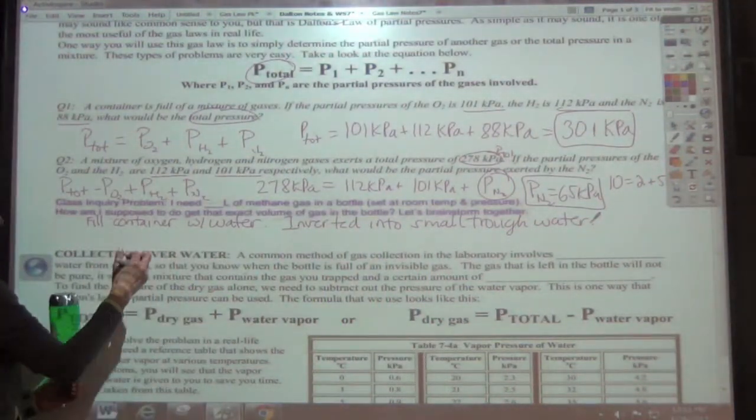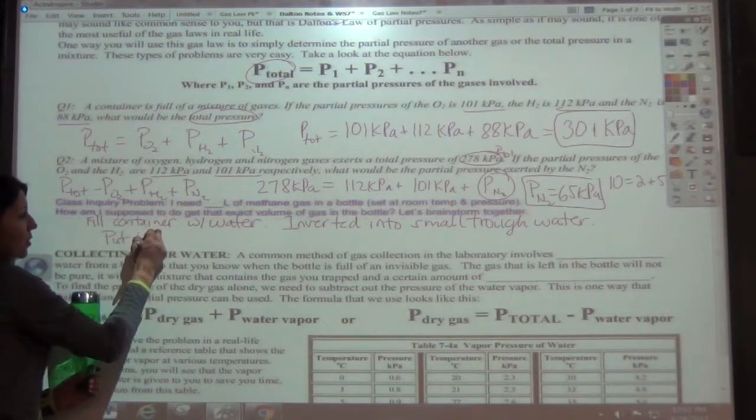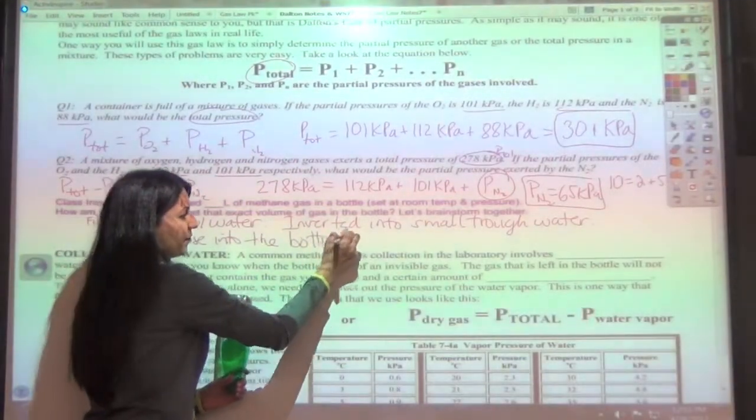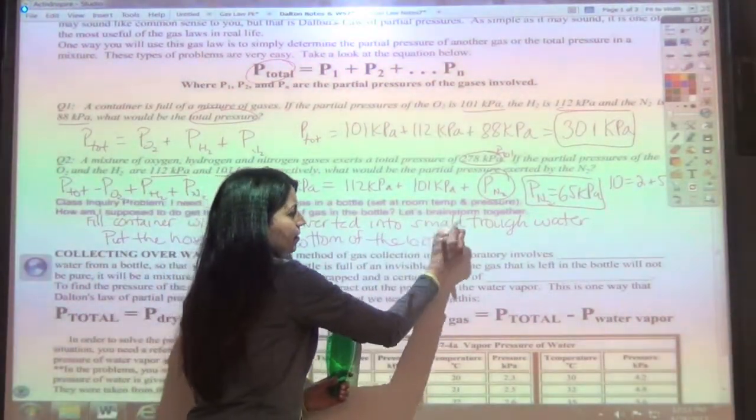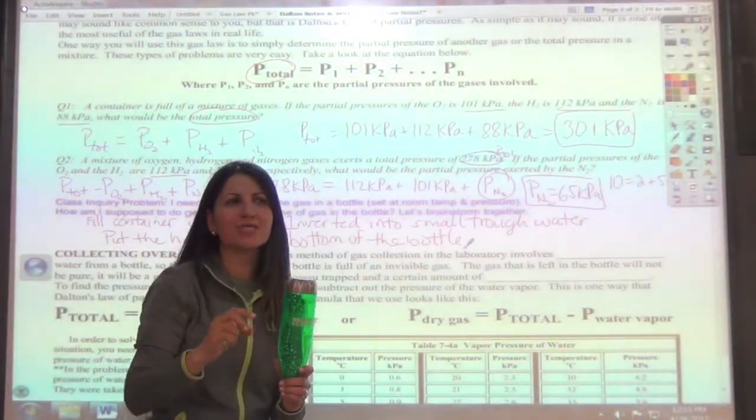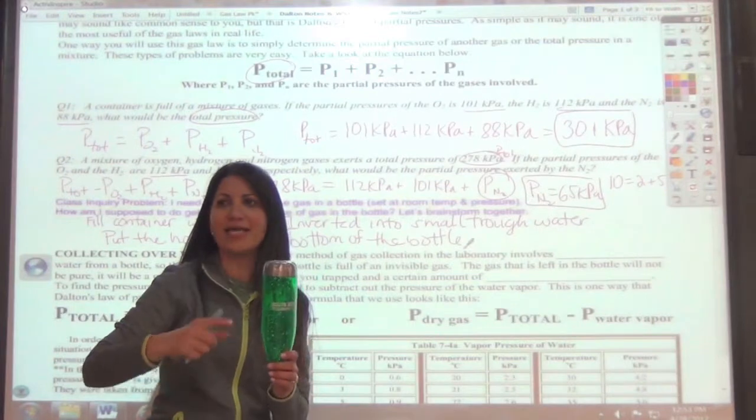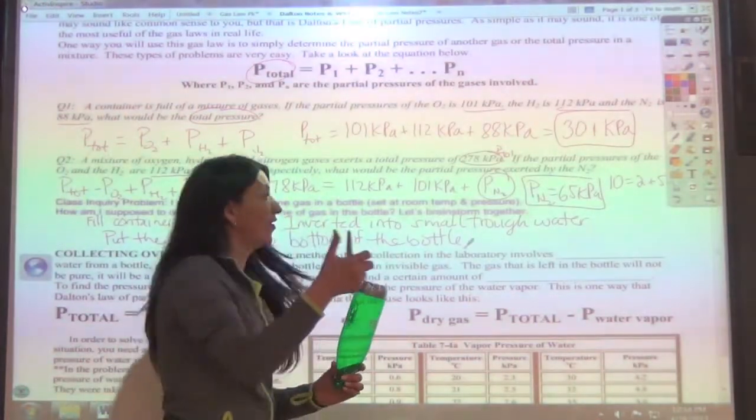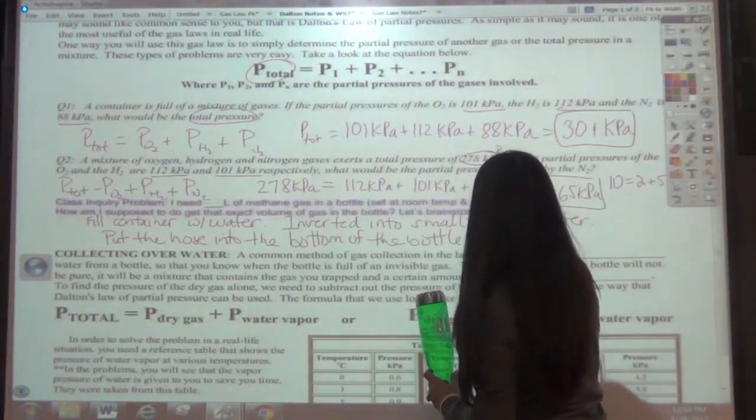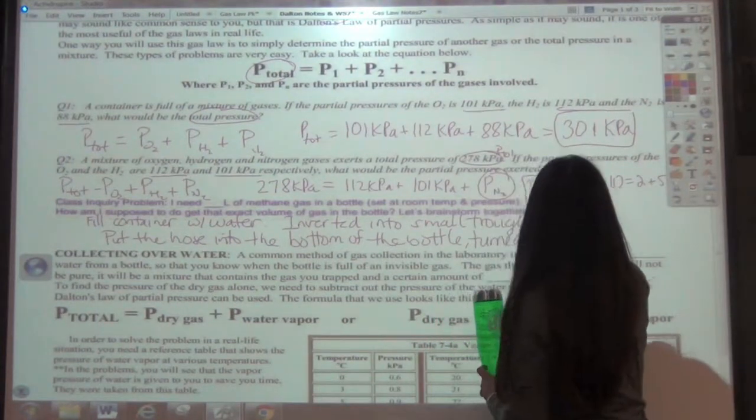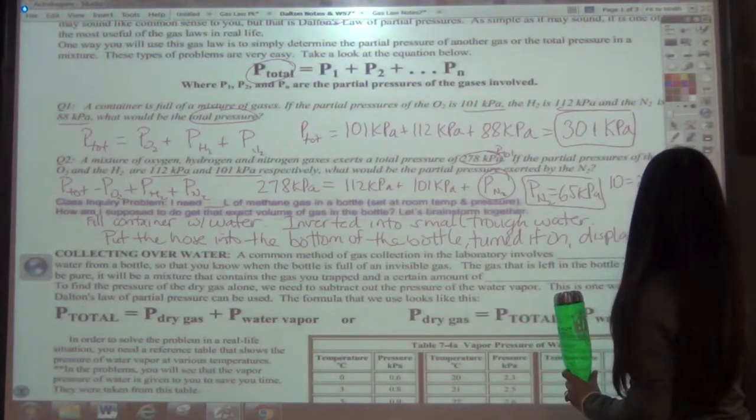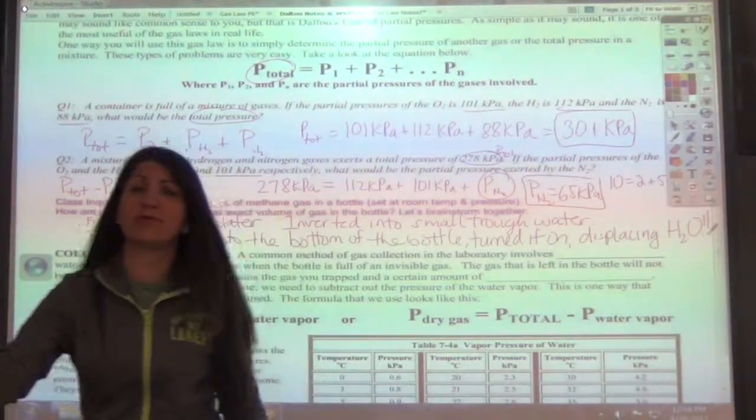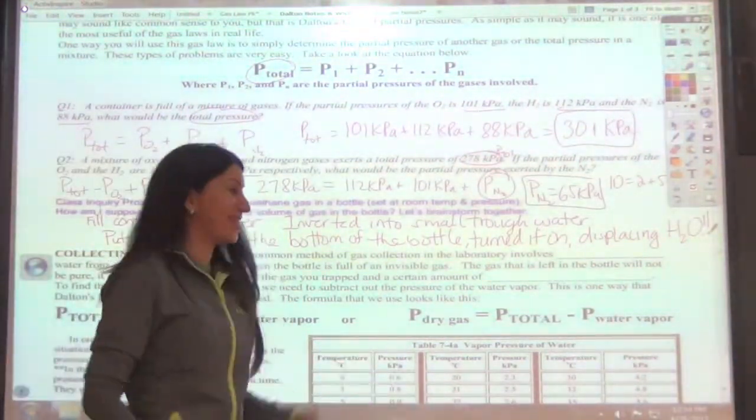And so we inverted it in and then we were able to put the hose into the bottom of the bottle. And then what did the gas do when we turned on the gas, when we turned the methane gas on? It pushed the water out. What word can we use? It starts with a D. We displaced the water. Awesome. And so we put the hose in and turned it on, displacing the water. Okay, we displaced the water and then once we got to a point where it was filled, then we know that it's now filled with the methane gas.